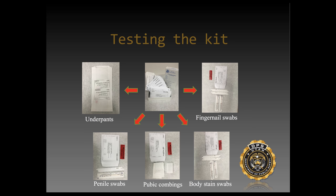Penile swabs are for male victims — a swab taken of the shaft of the penis to collect evidence of the perpetrator on the male victim. We also collect penile swabs on suspect kits when trying to associate a victim to a suspect's penis. Next are pubic combings, where we comb the pubic area to pick up any trace evidence — hairs from the suspect, fibers, or other debris in the pubic area. This is a collect-all type of evidence. Recent societal changes mean many victims are now shaved, so instead we ask nurses to swab the area or be aware of any debris present.